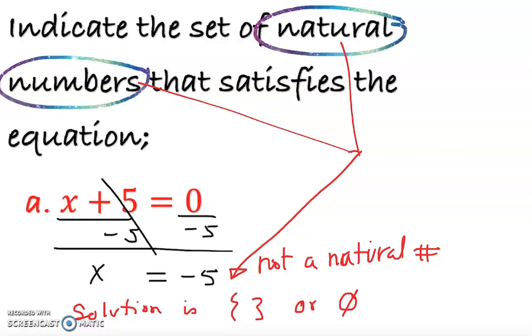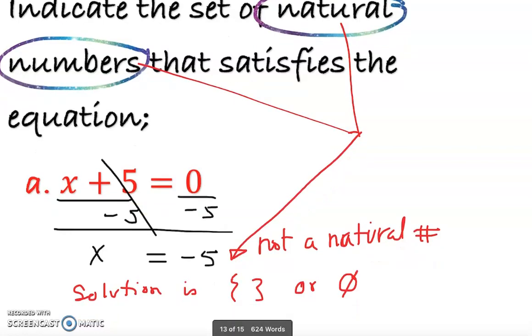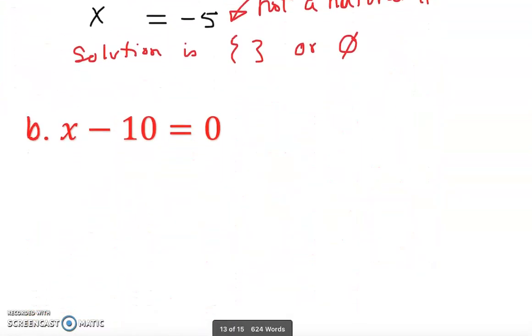We add 10 to both sides. Clearly you don't have to do that, you can do it mentally. So x = 10. How do we write the solution?